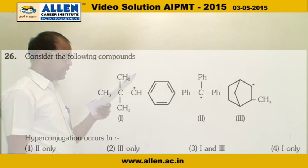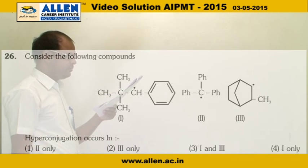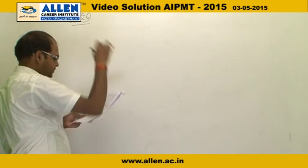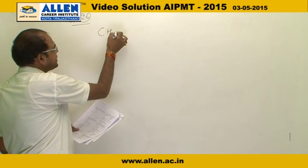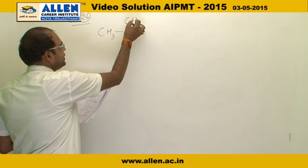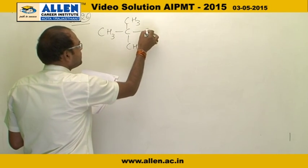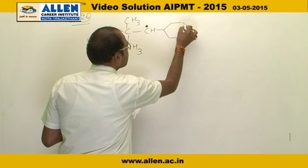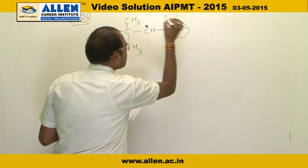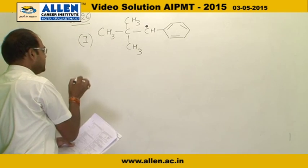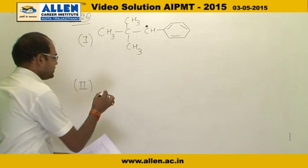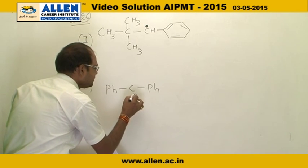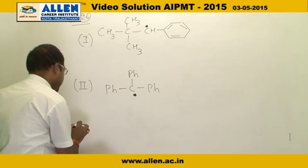Question number 26 asks: hyperconjugation occurs in which compounds? There are some compounds given. The first structure is CH3-C with CH3 groups, the second is triphenyl methyl carbon radical, and third is...